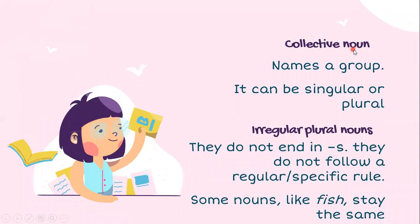Now, what are collective nouns? Collective nouns name a group and can be singular or plural. What is an irregular plural noun? Irregular plural nouns do not follow any regular rule — we do not just add s, es, or ies. For example, fish stays the same in both singular and plural — we are not adding s or es.